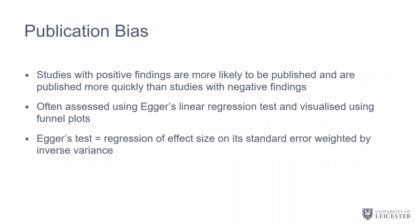More formally, publication bias is this phenomenon that studies with positive findings are more likely to be published and are more likely to be published more quickly than studies with negative findings.